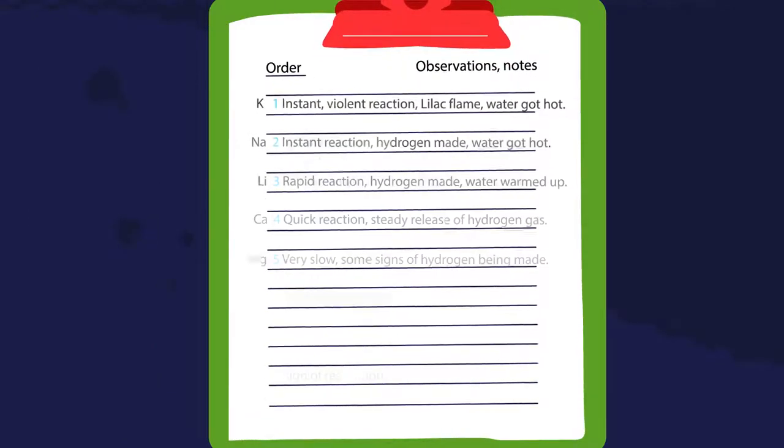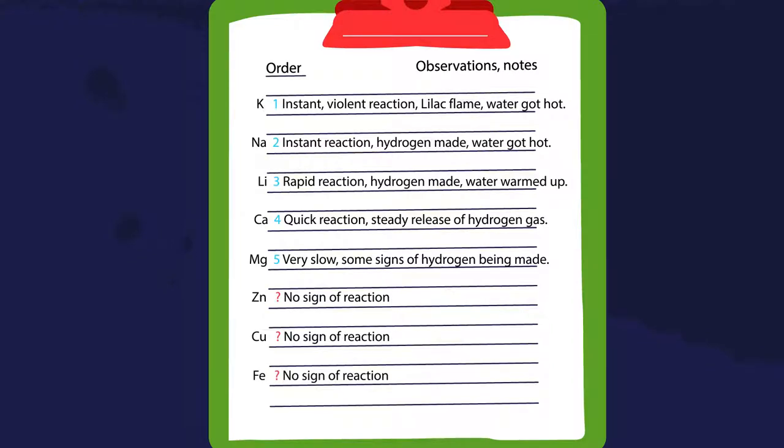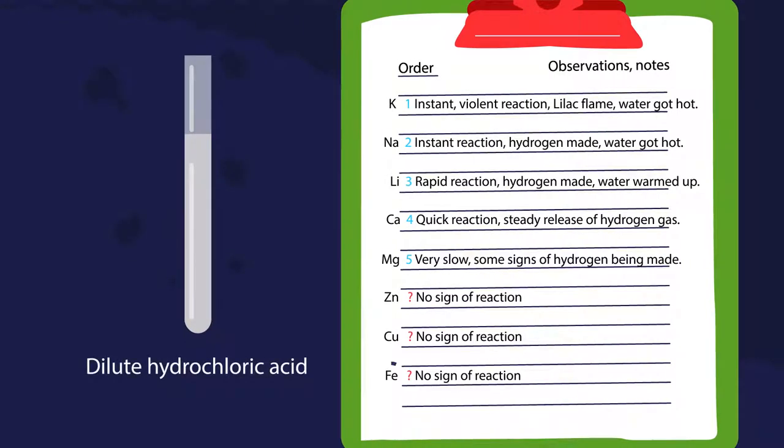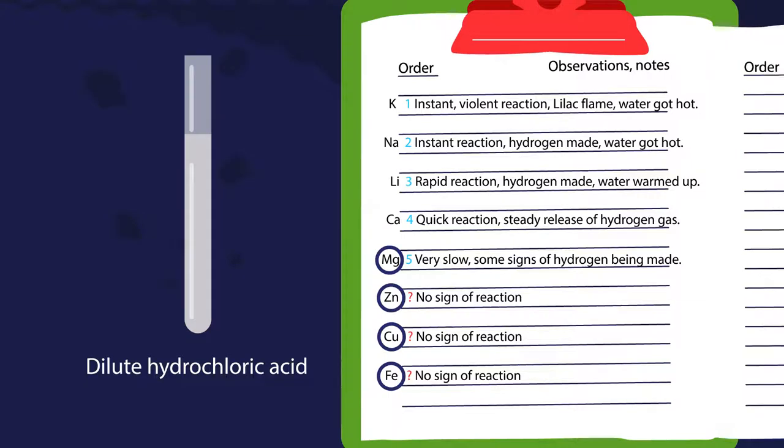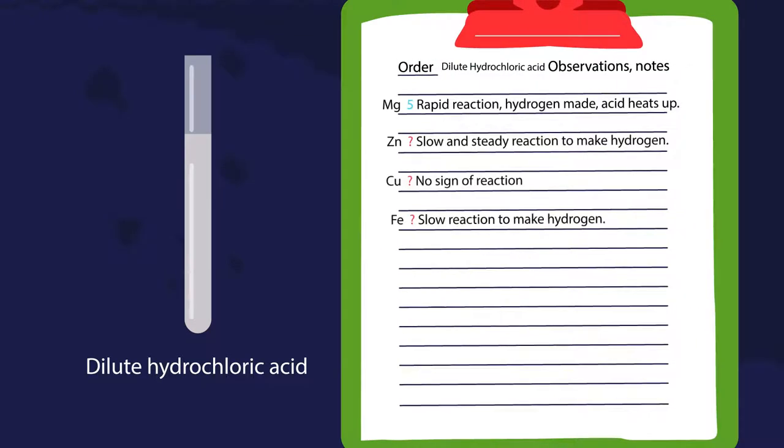Let's rewrite the list. If the experiment is repeated with dilute hydrochloric acid, we can reveal the different chemical reactivity of the metals that have not yet been ranked. And now rewrite the list again.